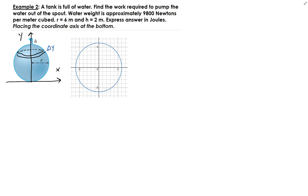The first thing we need to find is the incremental volume. We're going to use this distance as the radius — we'll call it x. But I want x to be in terms of y, because I'm integrating in the direction of the y-axis, so we need a formula for this radius in terms of y.